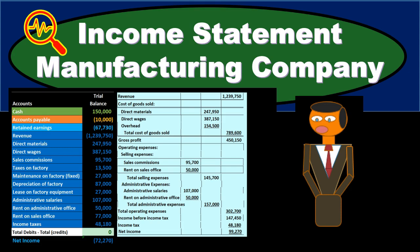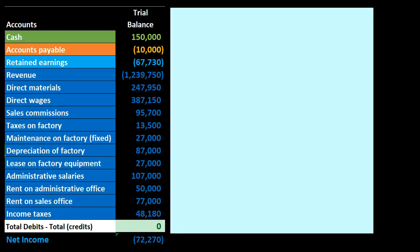In this presentation we will take a look at an income statement for a manufacturing company. We're going to first take a look at the standard structure for an income statement so that we can compare and contrast it to a CVP or contribution margin income statement. This is going to be the standard type of income statement that we will compare and contrast to, and we're going to generate this from a trial balance.